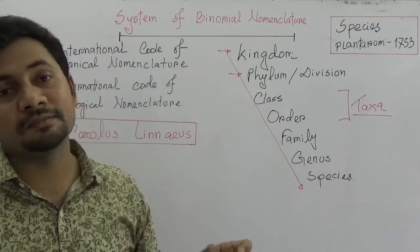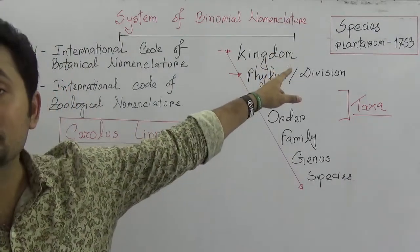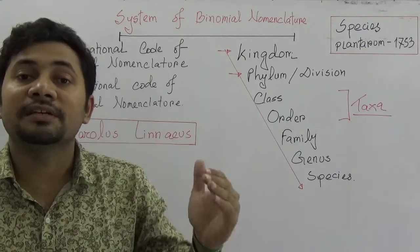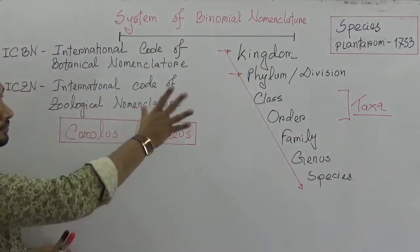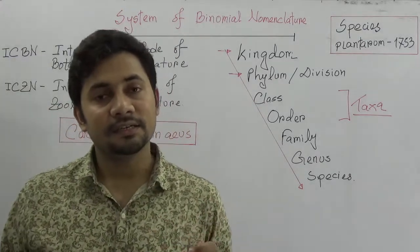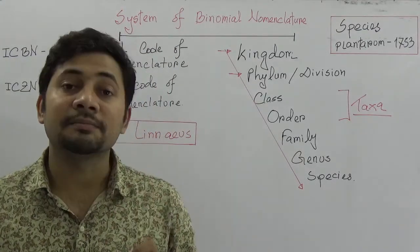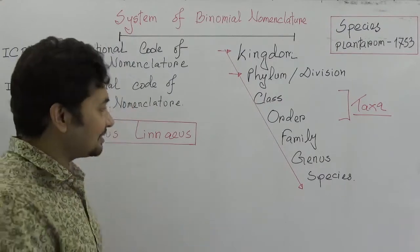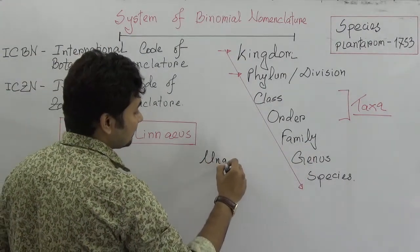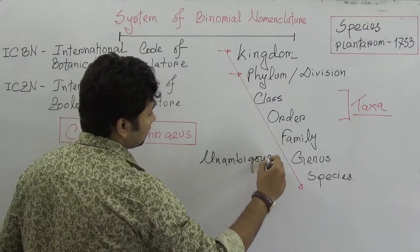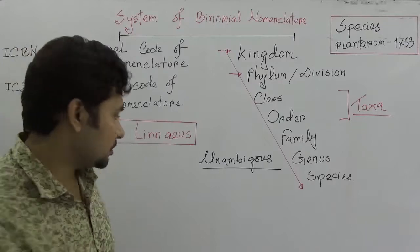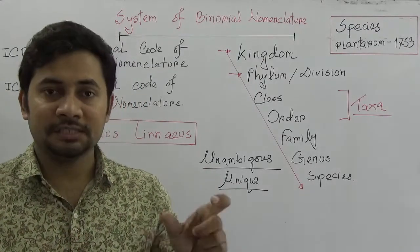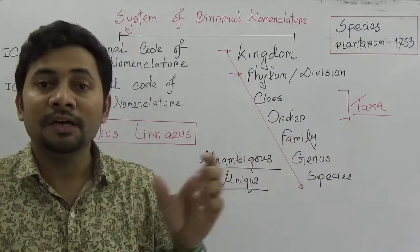The father of taxonomy is Carolus Linnaeus, because his book 'Species Plantarum' was published in 1753 where the process of classification was first identified. Since this is an internationally accepted system, there must be some rules for maintaining unambiguousness — meaning the system should be very specific and unique.